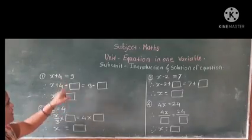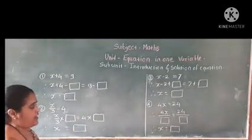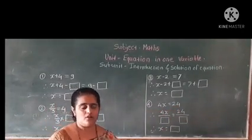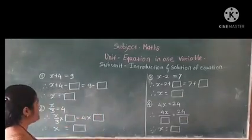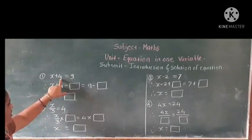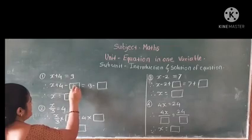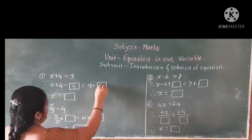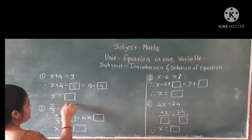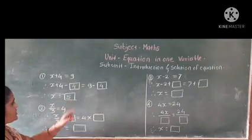We have to find out the value of x. Some empty boxes are present and we fill these boxes to find the value of x. Example number one: x plus 4 is equal to 9. Here, we subtract 4 from both sides. 4 minus 4 is 0, and 9 minus 4 is 5. So the value of x is 5.